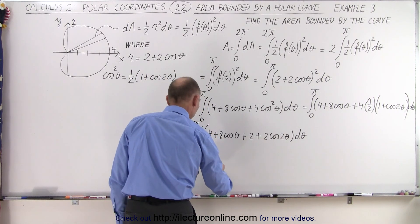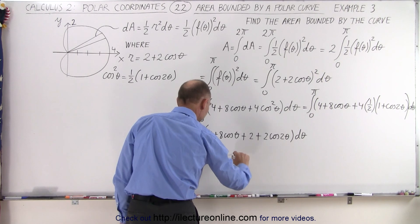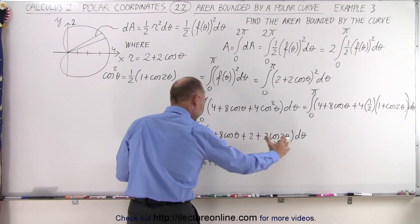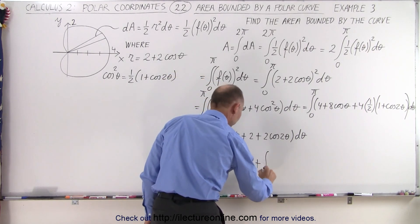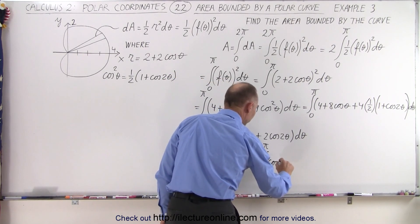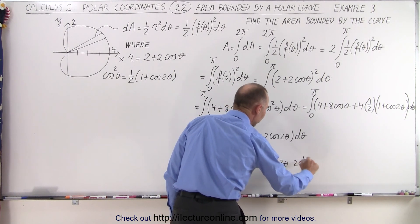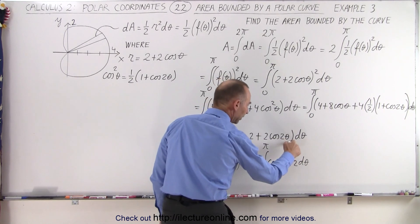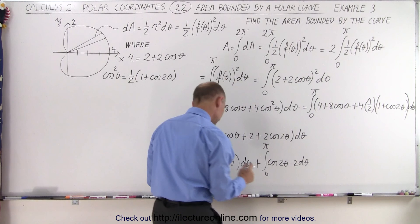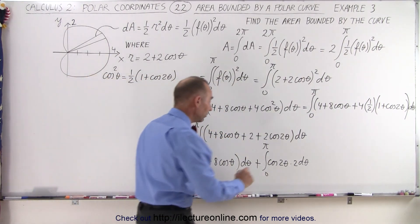So this can then be written as the integral from 0 to pi of 6 plus 8 times the cosine of theta. We're going to write this as d theta plus, because I'm separating the integrals here from 0 to pi, of the cosine of 2 theta times 2 d theta. So I took the two that was in front and placed it over there. So now I have the proper differential for the cosine of 2 theta. And yes, now I'm ready to integrate.